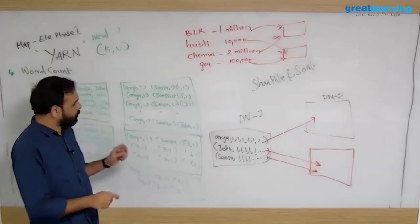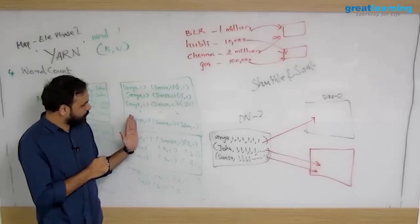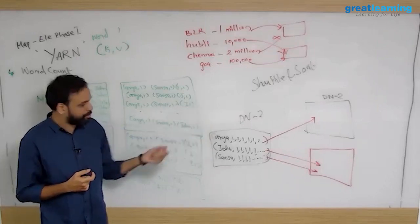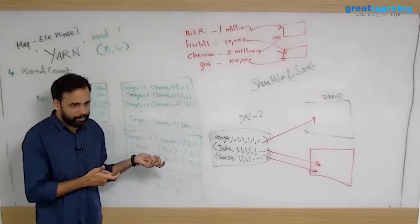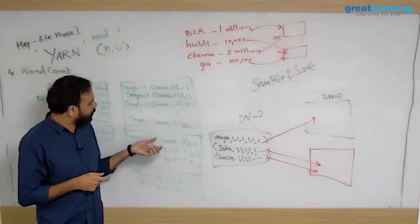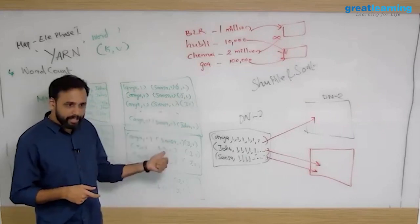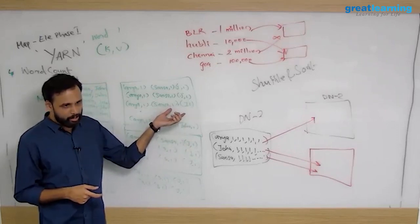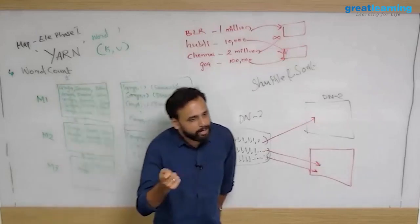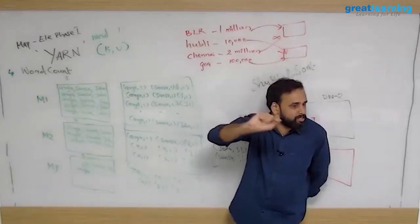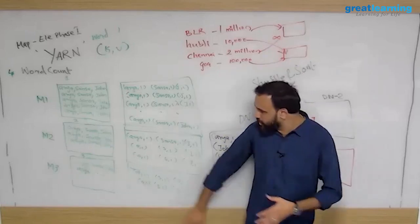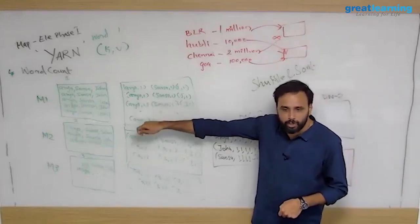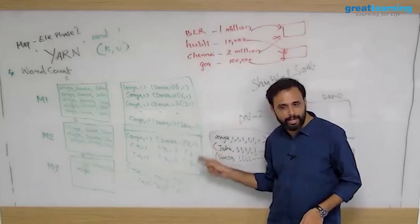Shuffle and sort data is also persisted. These are all Java processes running step by step. Once the mapper process is done and data is persisted, the shuffle and sort process kicks in and requests data. The framework knows which mappers ran where, loads the temporary persisted data into RAM, and data becomes available as key-value pairs. An associative index tells which data belongs to which key and value.